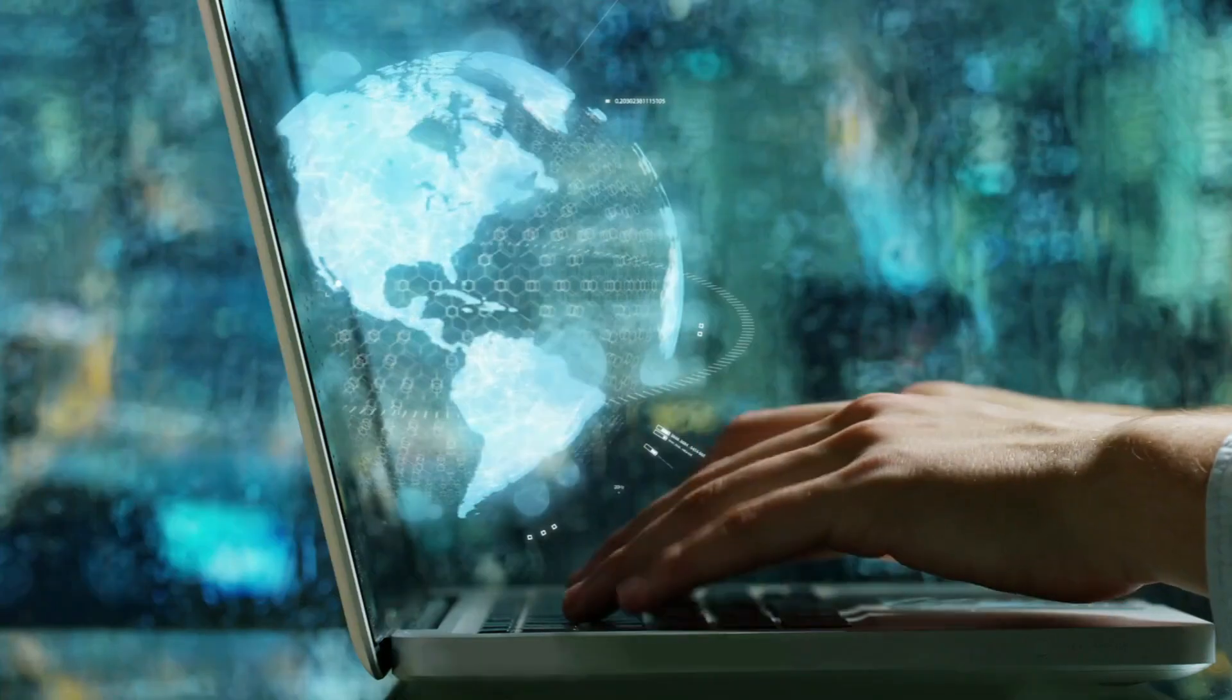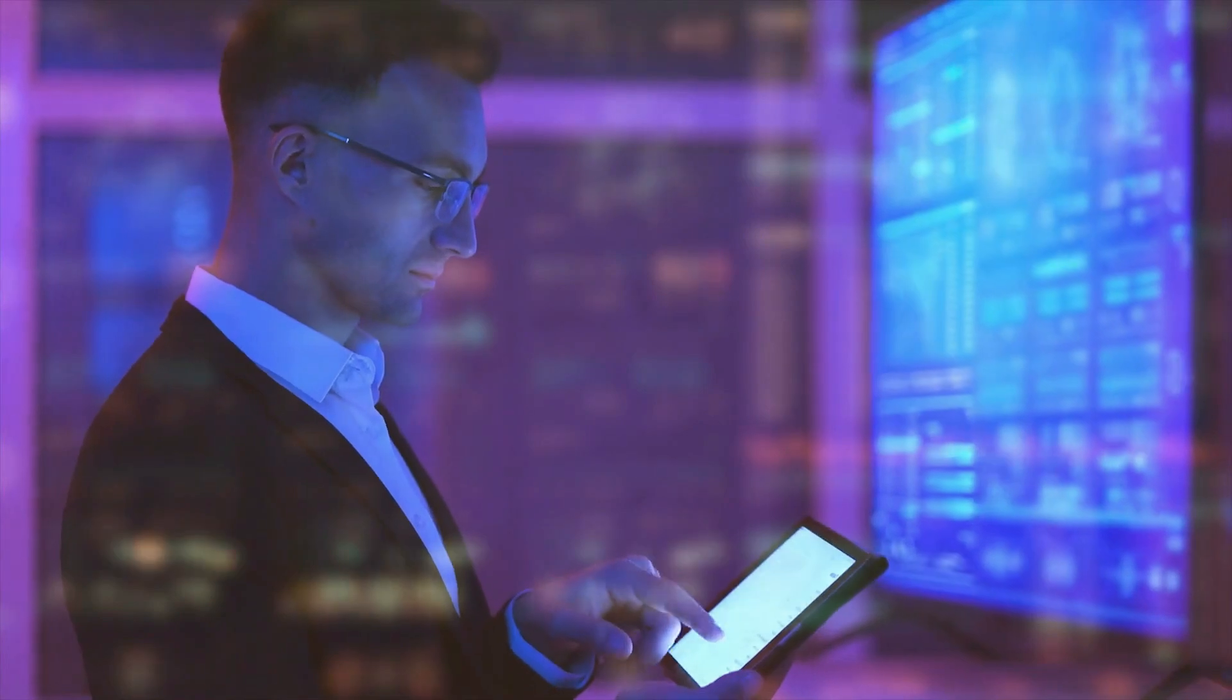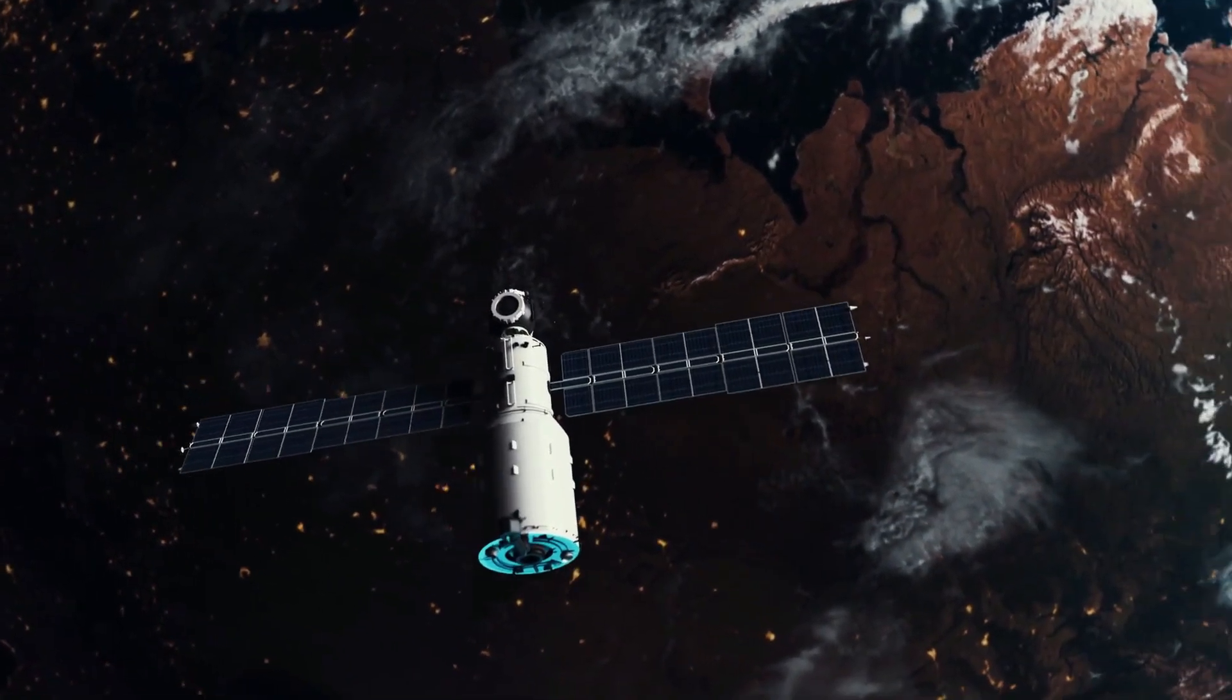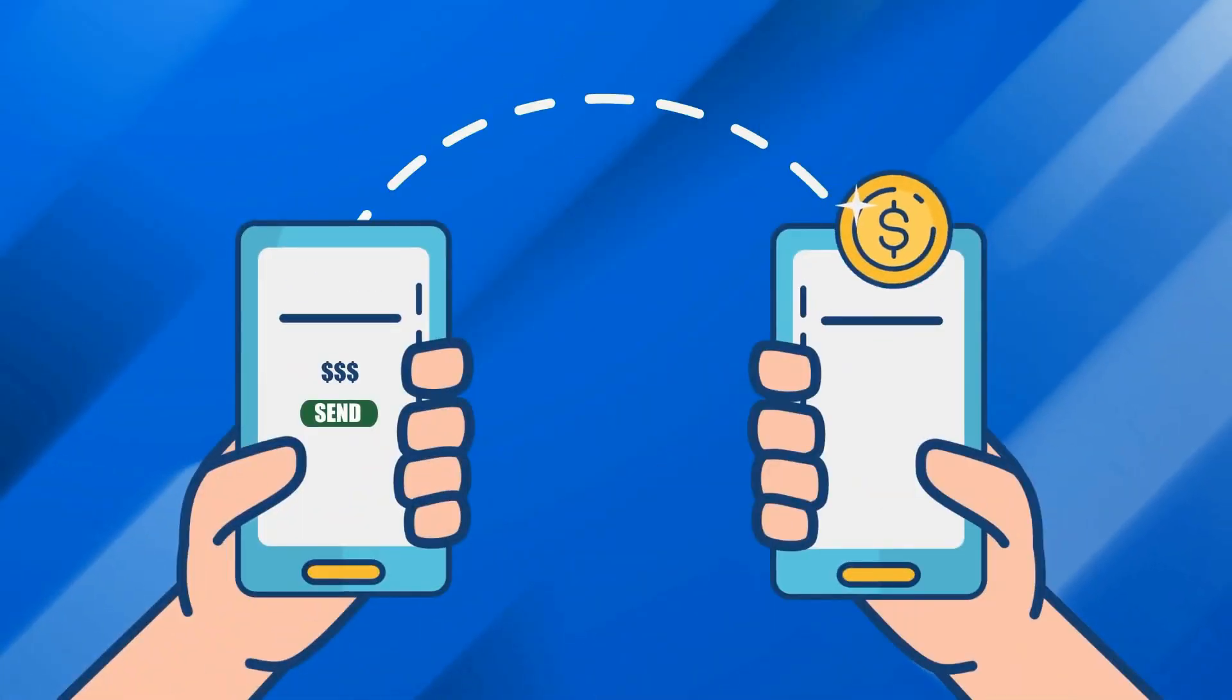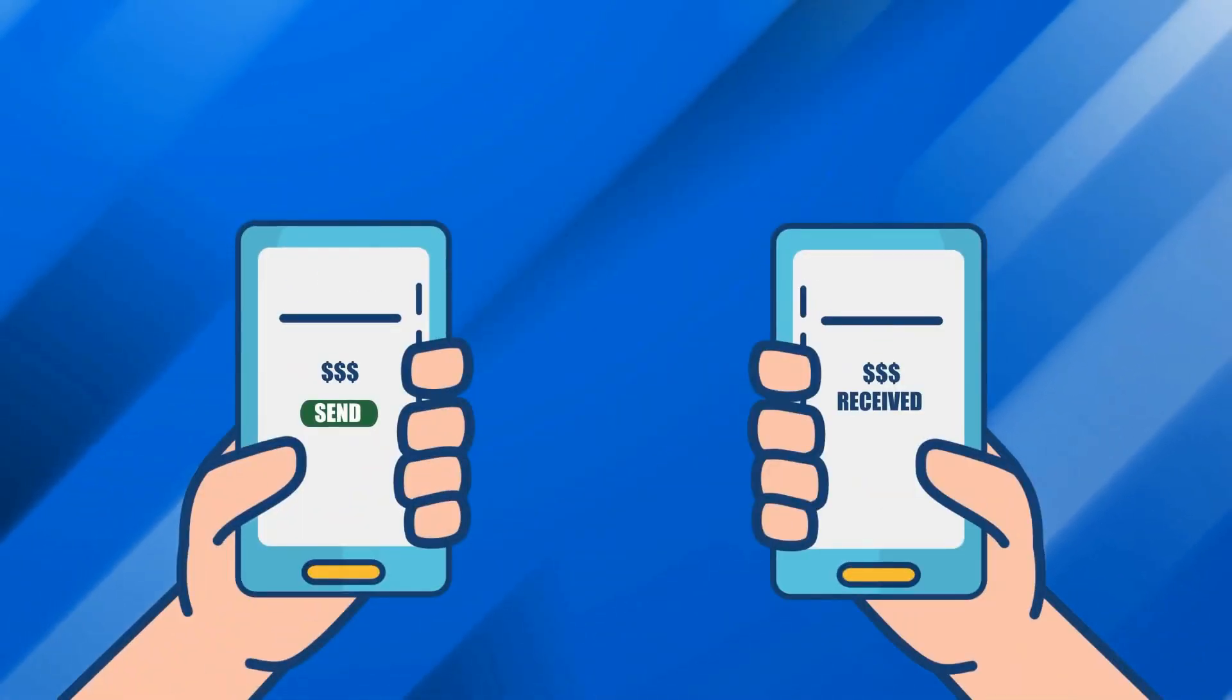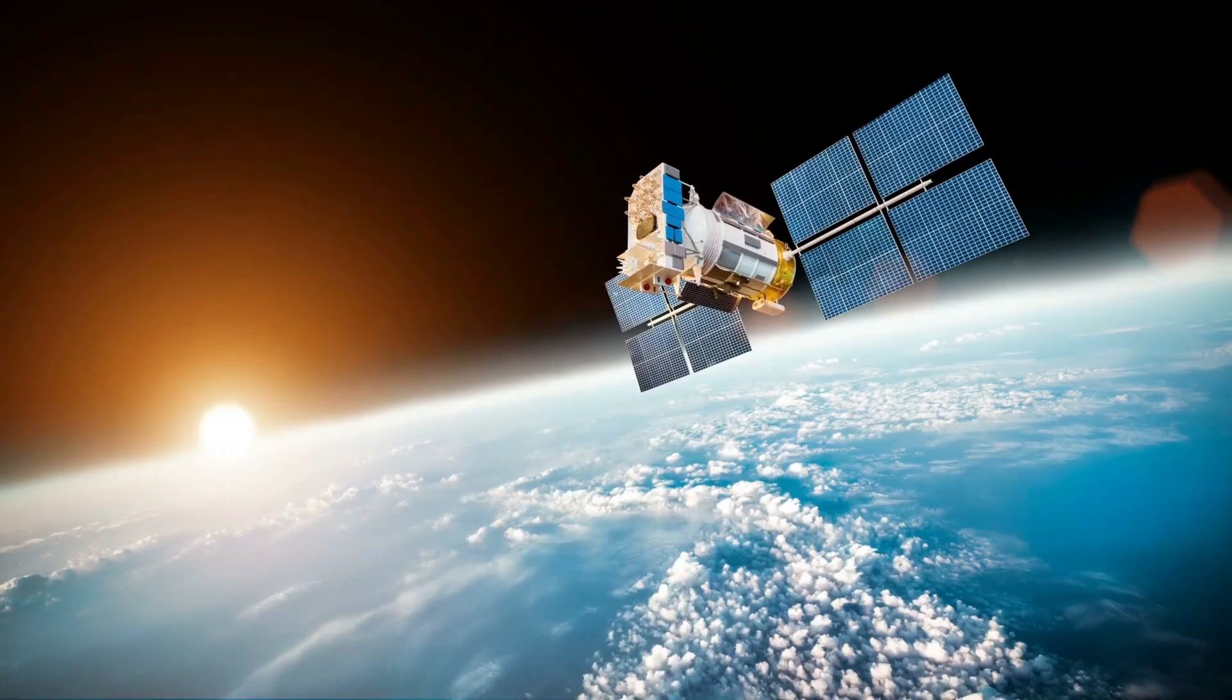As we navigate deeper into the digital era, our reliance on technology has never been greater. Satellites orbiting Earth provide a lifeline for communication, GPS navigation, and even financial transactions. Yet this interconnected web of technology is more vulnerable than we might think, especially to the whims of our sun.